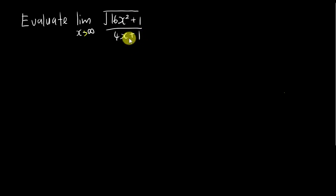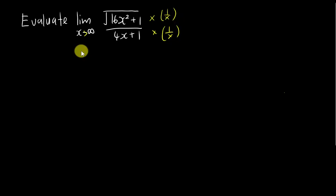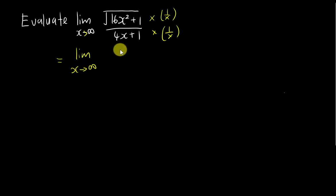My first idea for this kind of question is to multiply 1 over x for both numerator and denominator. Why? Because if I multiply 1 over x, I will get 1 divided by an extremely big number, which gives zero. So maybe I will get some final answer. Let's see what happens.